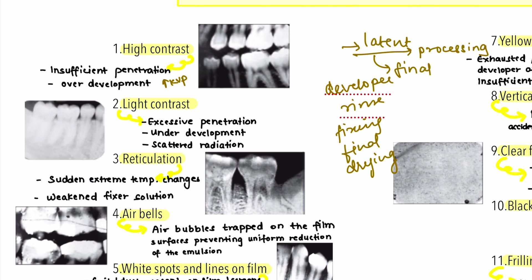The processing temperature should be lower than 70 degrees Fahrenheit. Other reasons for high contrast include high developer concentration, insufficient time in the fixer, or accidental exposure to light if safe lighting is improper or if you are storing the film without shielding — all of these can lead to a darker, high contrast film.